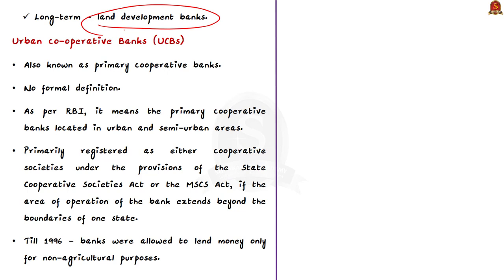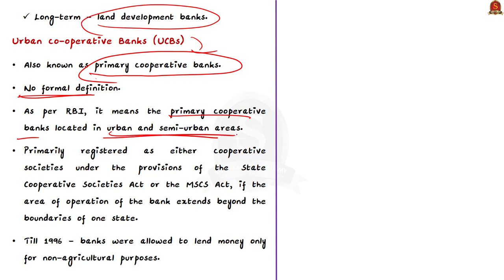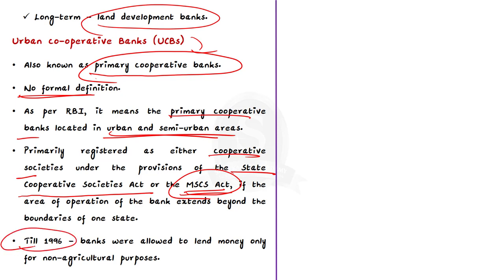Now let us move on to urban cooperative banks (UCBs), also known as primary cooperative banks. There is no formal definition of UCBs, but according to RBI, cooperative banks located in urban and semi-urban areas are called urban cooperative banks. UCBs are primarily registered as cooperative societies under the provision of the state cooperative societies act of the concerned state. If a UCB serves more than one state, it is also registered under the MSCS Act 2002. Till 1996, urban cooperative banks were allowed to lend money only for non-agricultural purposes, but currently they also lend for agricultural purposes.